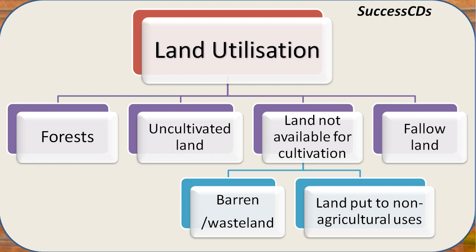Land is utilized in the form of forest and uncultivated land. Uncultivated land is the one which is not used for the purpose of agriculture. Land not available for cultivation is of two types: barren wasteland and land put to non-agriculture use. Barren land doesn't have the potential to support plant growth, while wastelands are those in which plants can grow but are not yet utilized to their full potential.